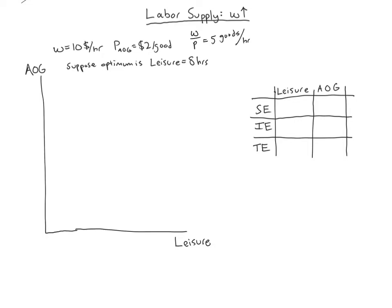Now we've got to think about constructing a budget constraint. The first point we can get is that the maximum amount of leisure we can have is just spending all day on leisure, so that's 24 hours. Then we can get a point for the maximum amount of all other goods we can buy. If we get paid 5 goods per hour and we work all 24 hours, we can multiply that and get 120 goods. Now we can connect these dots and get our standard budget constraint.